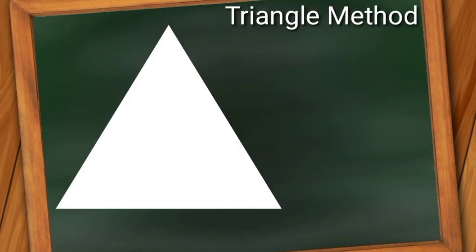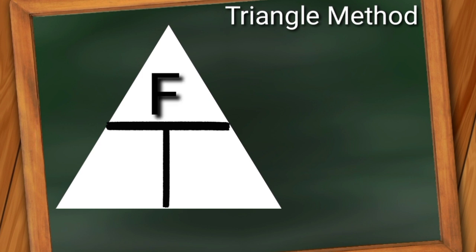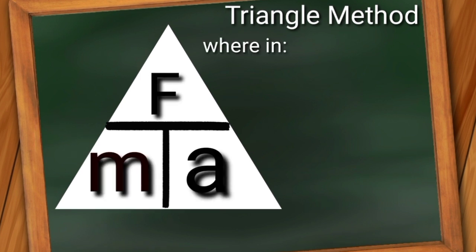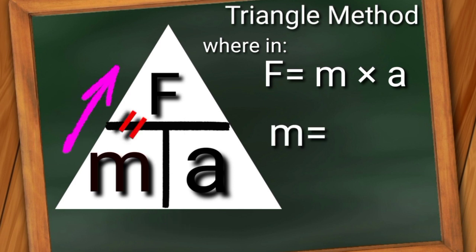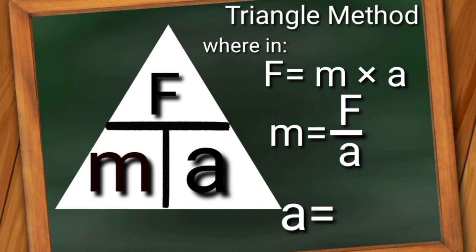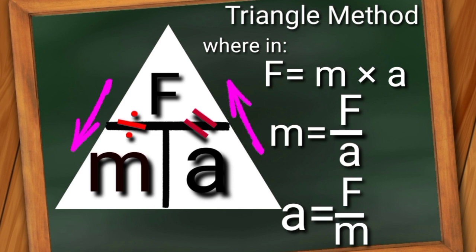Or use the triangle method. First, draw a triangle, divide it like this. We have upper and lower parts. We have capital F on the upper and small m and A on the lower. Use the figure and follow the arrow: F = M × A, M = F / A, and A = F / M. This is a simple tip to familiarize the formula.